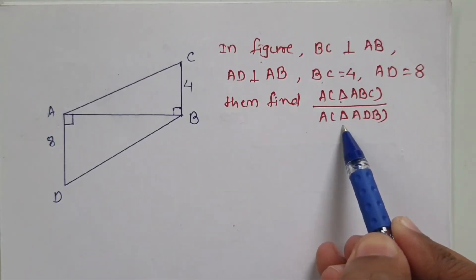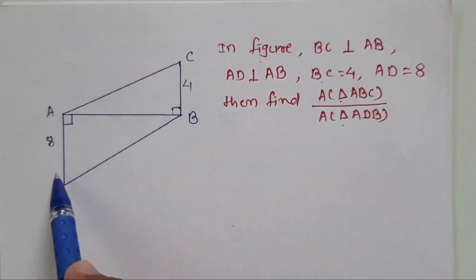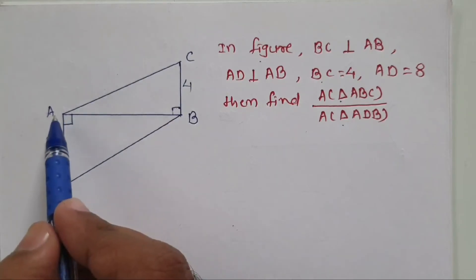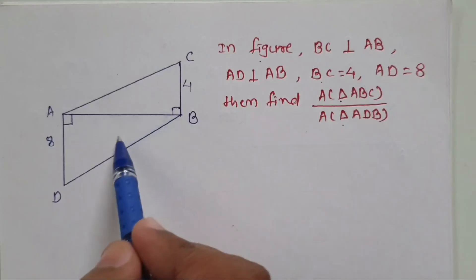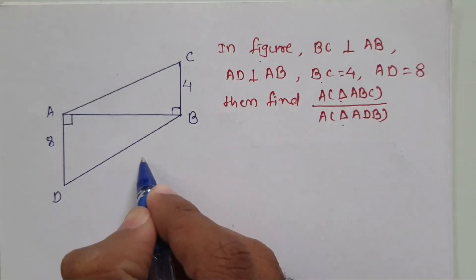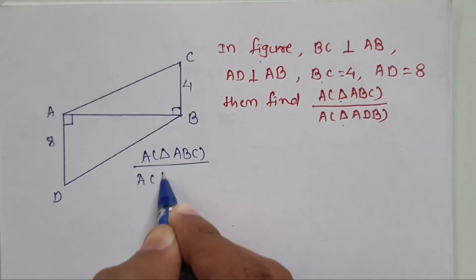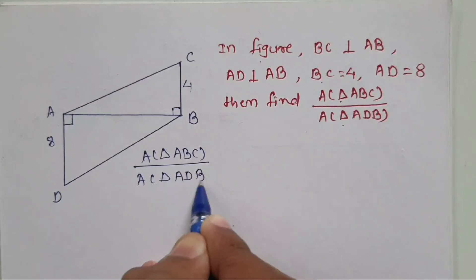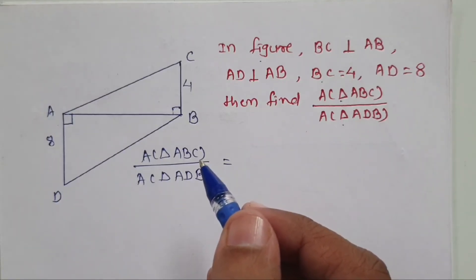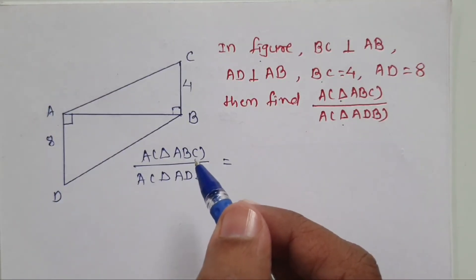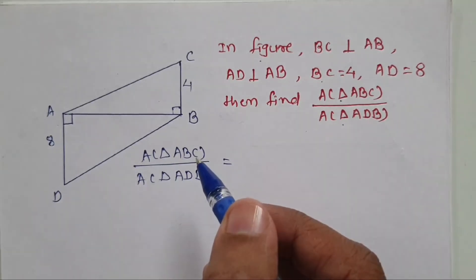AD is given to be 8 units, and from this we have to find the area of triangle ABC divided by area of triangle ADB. If we consider these two triangles, BC and AD are two line segments which are perpendicular to a common side — we can treat it as a common base. So for these two triangles the base is common. If there are two triangles whose base is common, then the ratio of their areas is dependent on their respective heights.